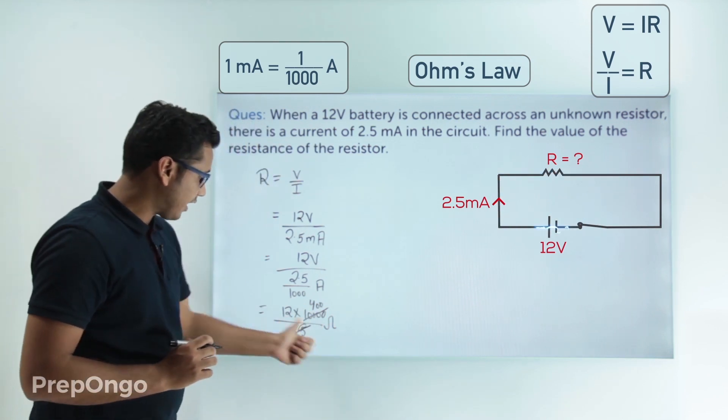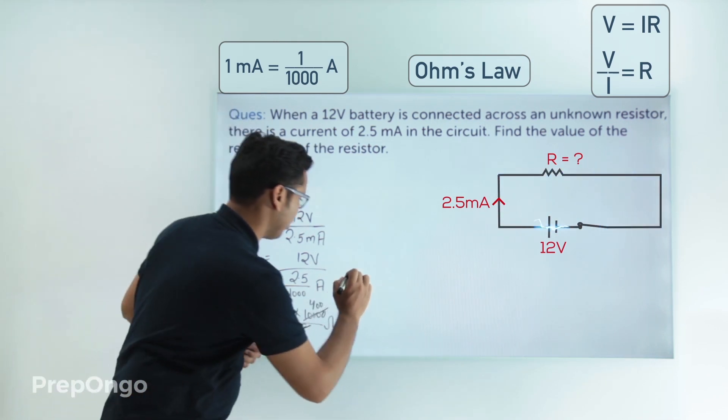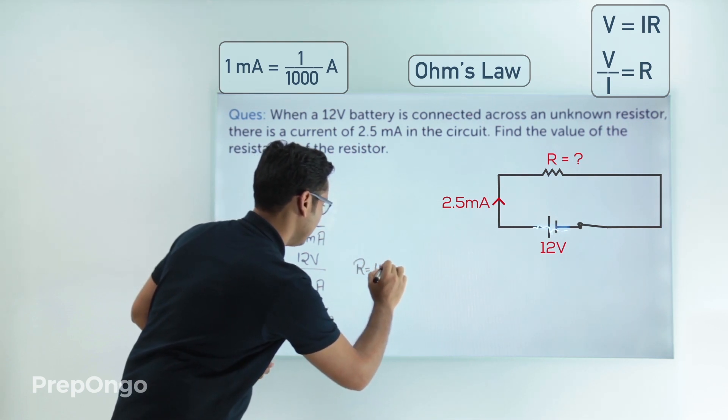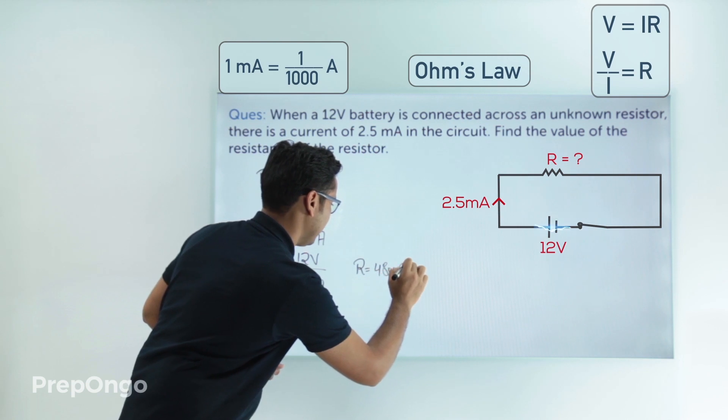If we calculate this 12 into 400, this will come out to be... the value of R is coming out to be 4800 ohms.